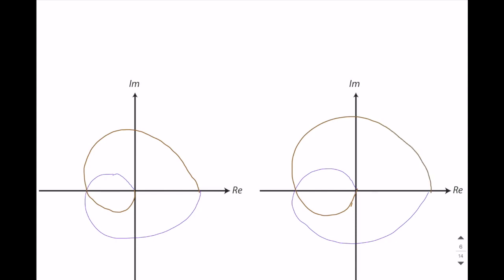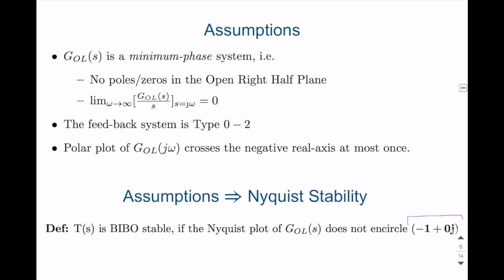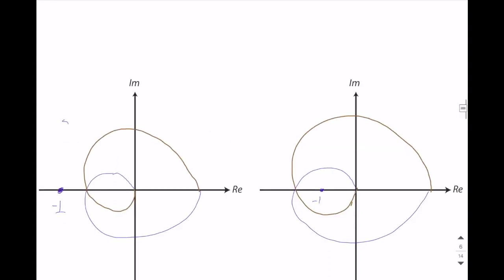And let's assume that in the first Nyquist plot, minus one plus zero j is located here. In the second one, minus one is located here. So if we use the definition which says that T of S is BIBO stable if Nyquist plot does not encircle or cross minus one plus zero j point, which means that in this case, this is stable, but this is unstable. Because the region that is just encircled or covered by the Nyquist plot is this, and minus one is included in this point. In the second case, this region technically encircles or includes the minus one point.